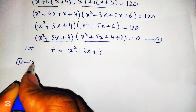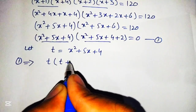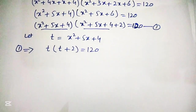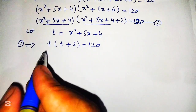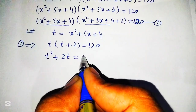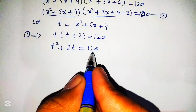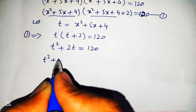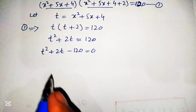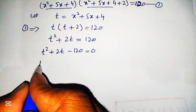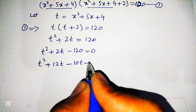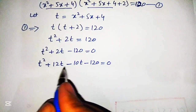Putting this substitution into equation 1, we get t into t plus 2 is equal to 120. This is a simple equation to solve. Multiplying t inside gives t² plus 2t equals 120. Rearranging by taking 120 to the left-hand side, we get t² plus 2t minus 120 equals 0.